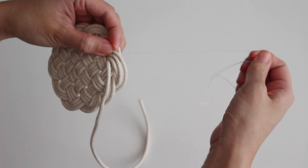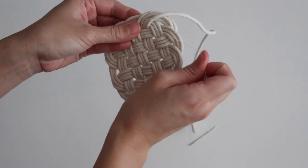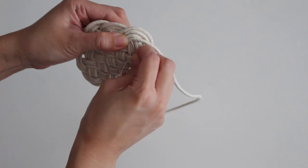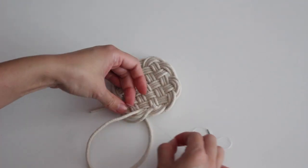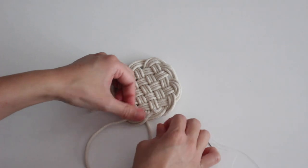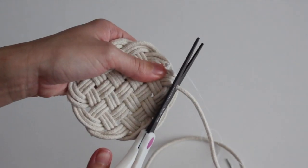Sew back and forth until the coaster seems secure. Then cut the extra cord.